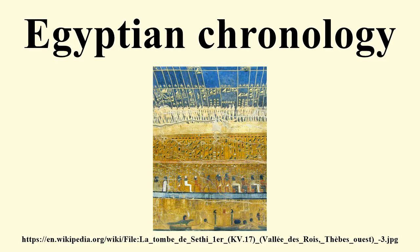Scholarly consensus on the general outline of the conventional chronology current in Egyptology has not fluctuated much over the last 100 years. For the Old Kingdom, consensus fluctuates by as much as a few centuries, but for the Middle and New Kingdoms it has been stable to within a few decades. This is illustrated by comparing the chronology as given by two Egyptologists, the first writing in 1906 and the second in 2000. The disparities between the two sets of dates result from additional discoveries and refined understanding of the still very incomplete sources.